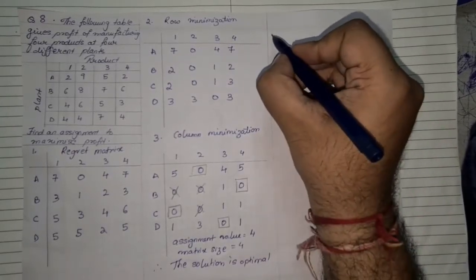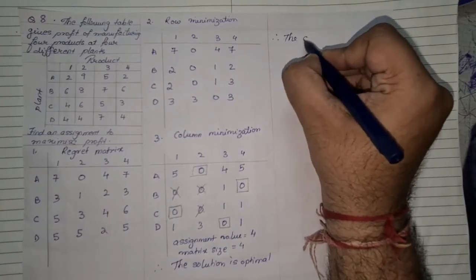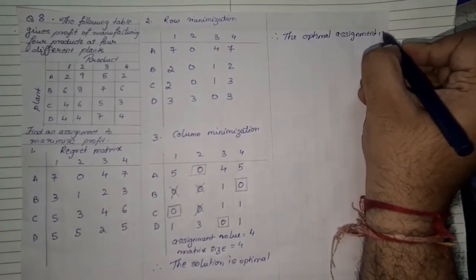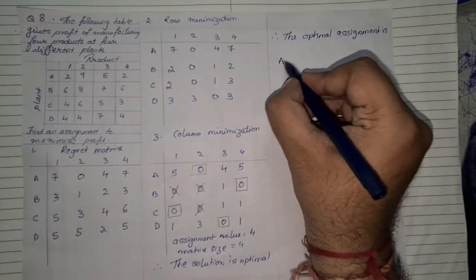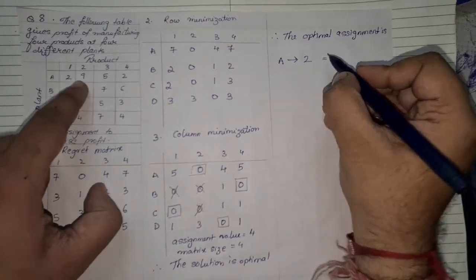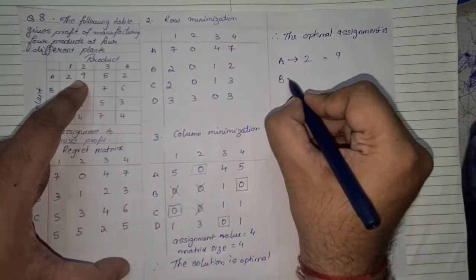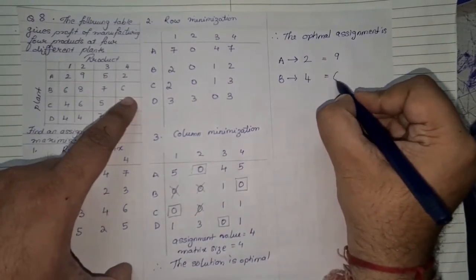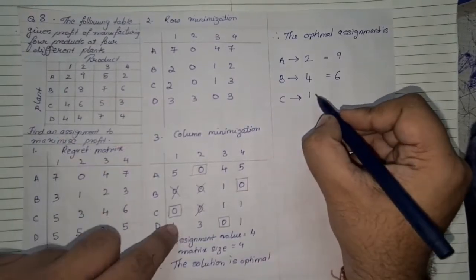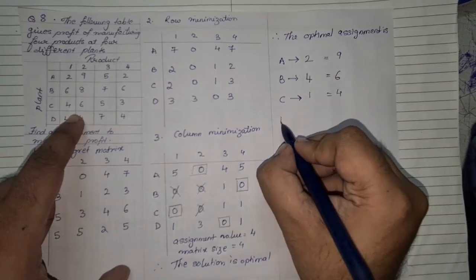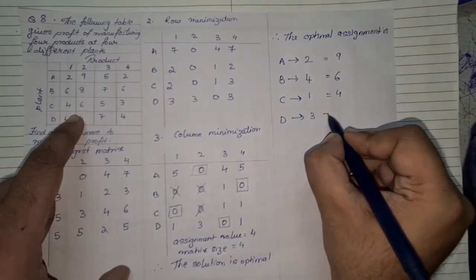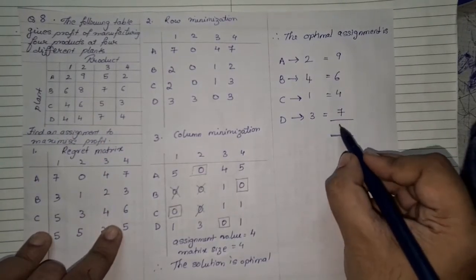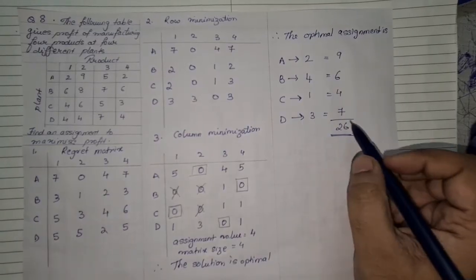The moment of the solution is optimal we can say that therefore the optimal assignment is now for plant A product 2 was selected for which the value is 9, for plant B product 4 was selected the value for which is 6. For plant C the first value was selected which is 4 and for plant D third value was selected the third product was selected which is 7. The total of which is supposed to be 26. 9, 15, 19, 26 is that total value.